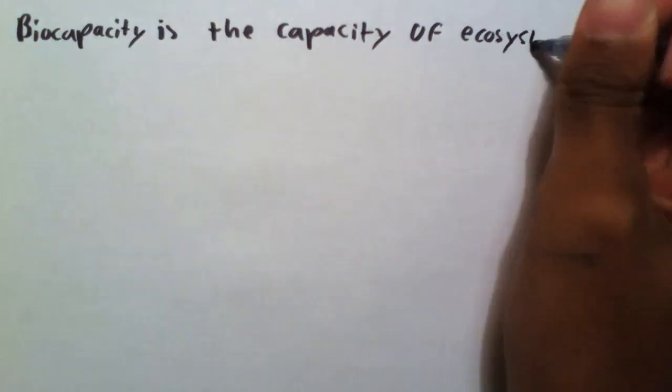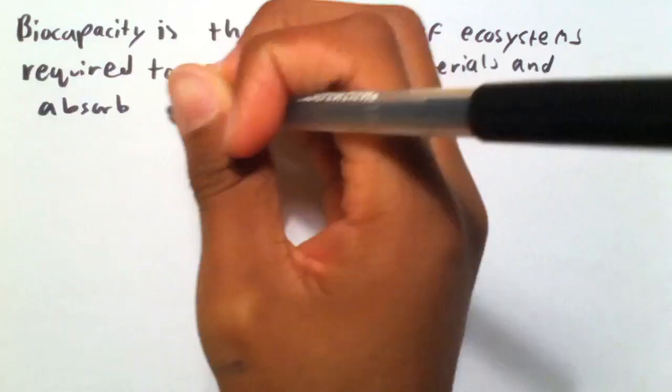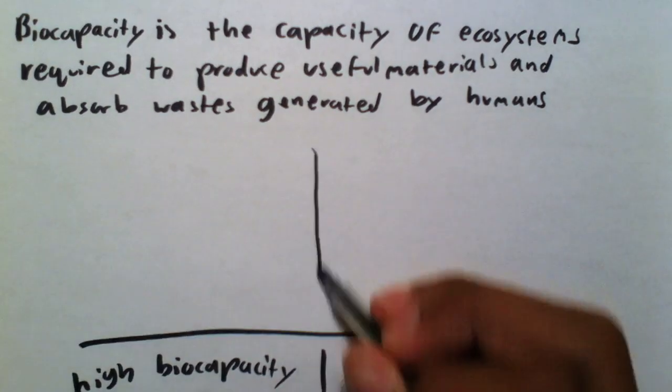Bio-capacity is the capacity of ecosystems to produce useful materials and absorb waste generated by humans.